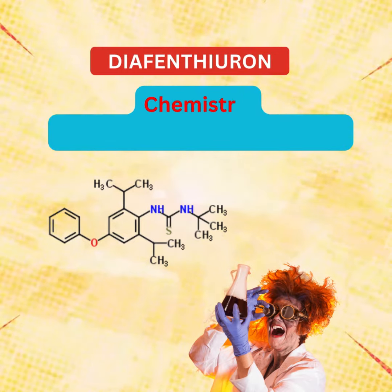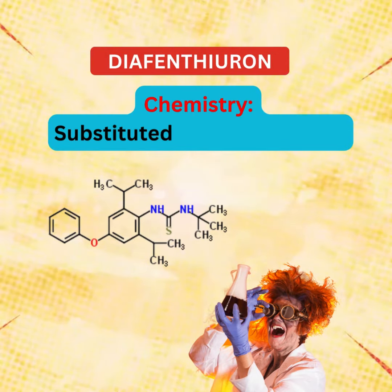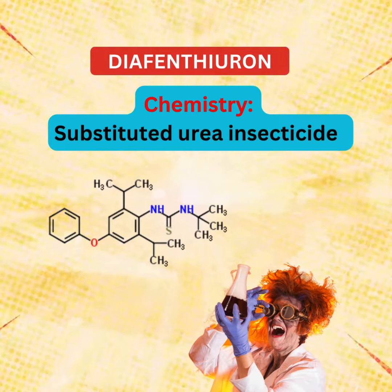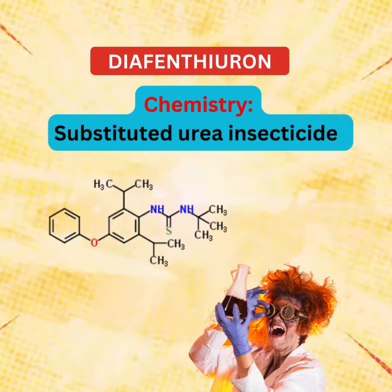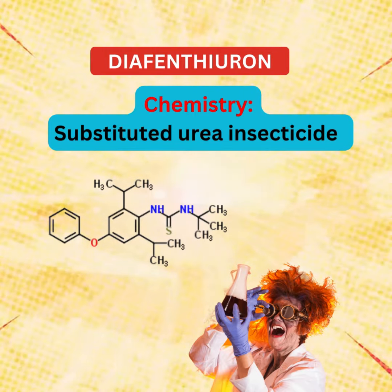Introducing Diaphentheuron. Chemistry: Diaphentheuron is a substituted urea insecticide. The structure of diaphentheuron is given below.